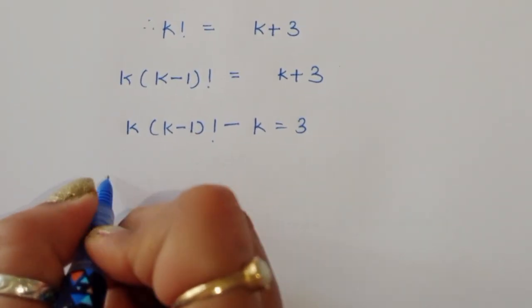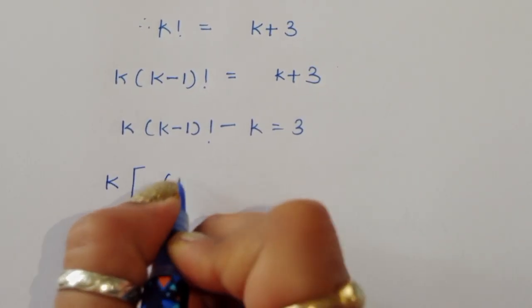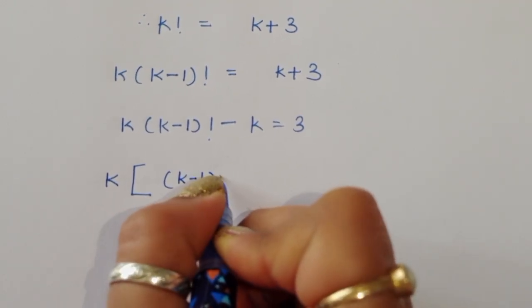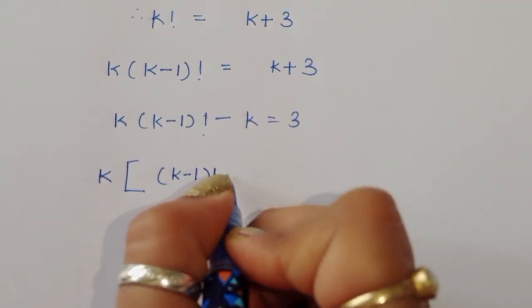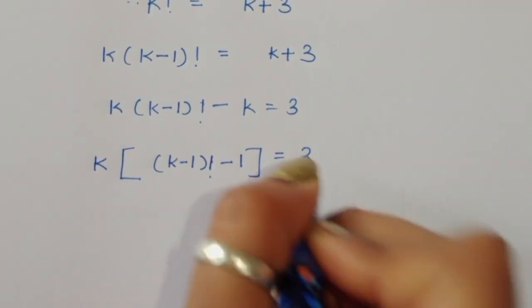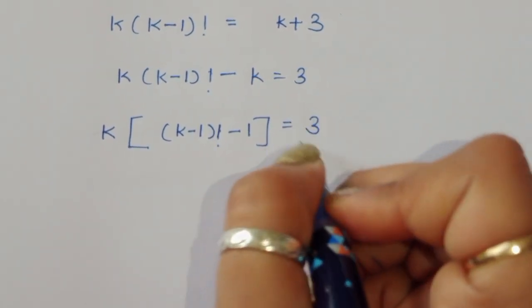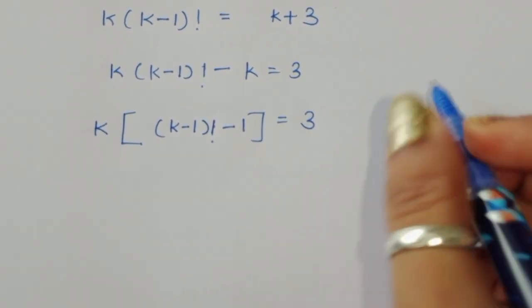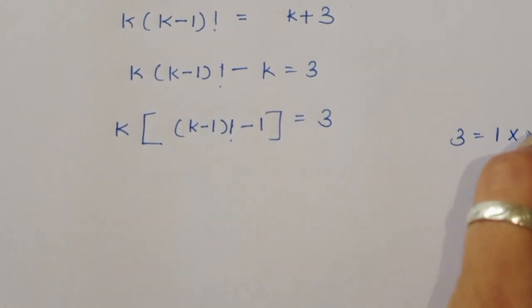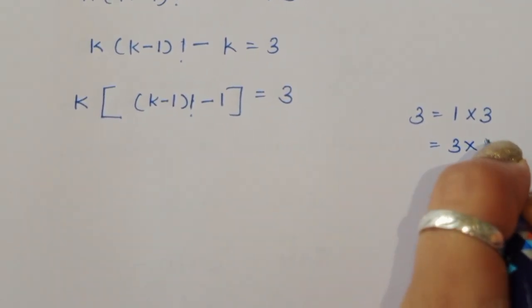Taking k as common on the left side: k times [(k minus 1) factorial minus 1] equals 3. The factors of 3 are: 1 times 3, or 3 times 1.